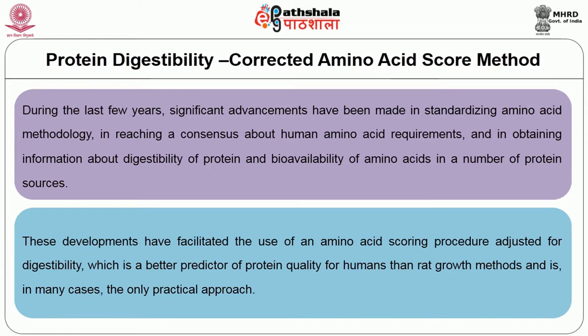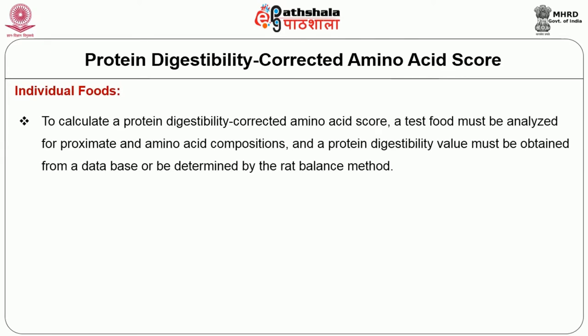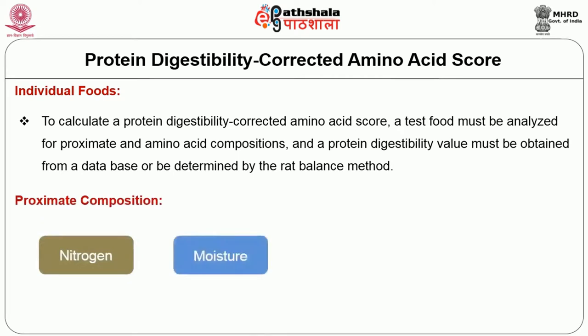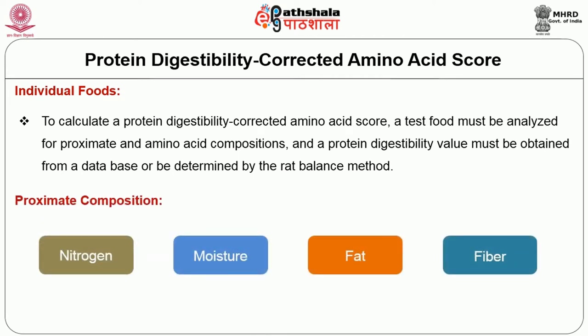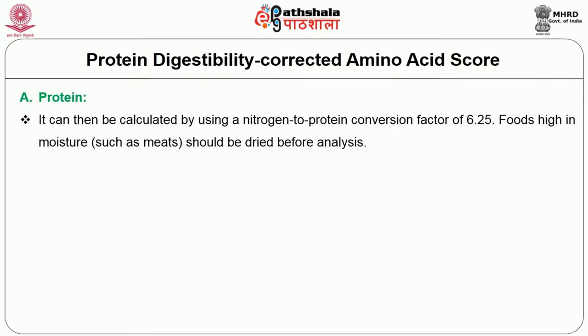How is the PDCAAS — Protein Digestibility Corrected Amino Acid Score — determined for individual foods? To calculate a PDCAAS, a test food must be analyzed for proximate and amino acid compositions, and a protein digestibility value must be obtained from a database or determined by the rat balance method. Proximate composition — level of nitrogen, moisture, fat, and total dietary fiber — should be determined according to the Association of Analytical Chemists method. Protein is then calculated using a nitrogen-to-protein conversion factor of 6.25, or appropriate specific factors when precise nitrogen contents are available. Where not available, the 6.25 factor can be utilized.